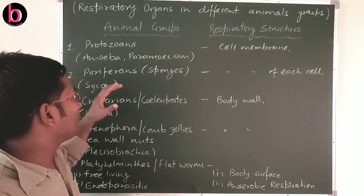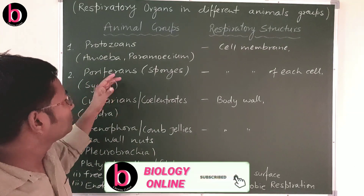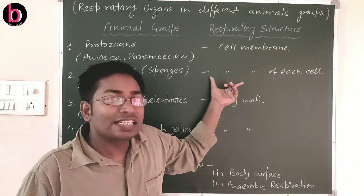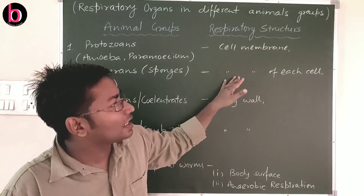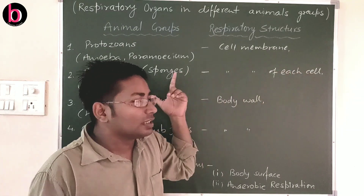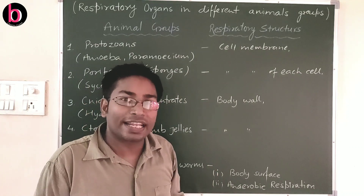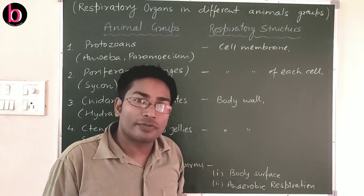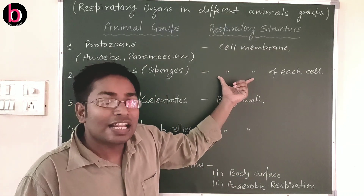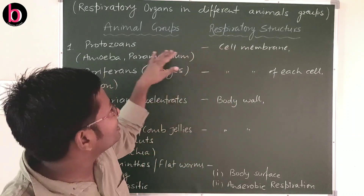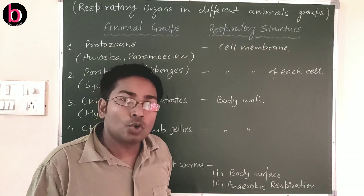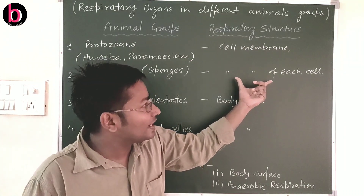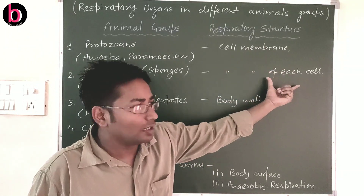The second phylum is Porifera, commonly known as sponges — the first phylum in Class 11 Biology Animal Kingdom. Example is Sycon. They have a multicellular composition, but their cells are not organized into tissues, so they have a cellular level of body organization. Respiration occurs in every single cell through the cell membrane or plasma membrane.